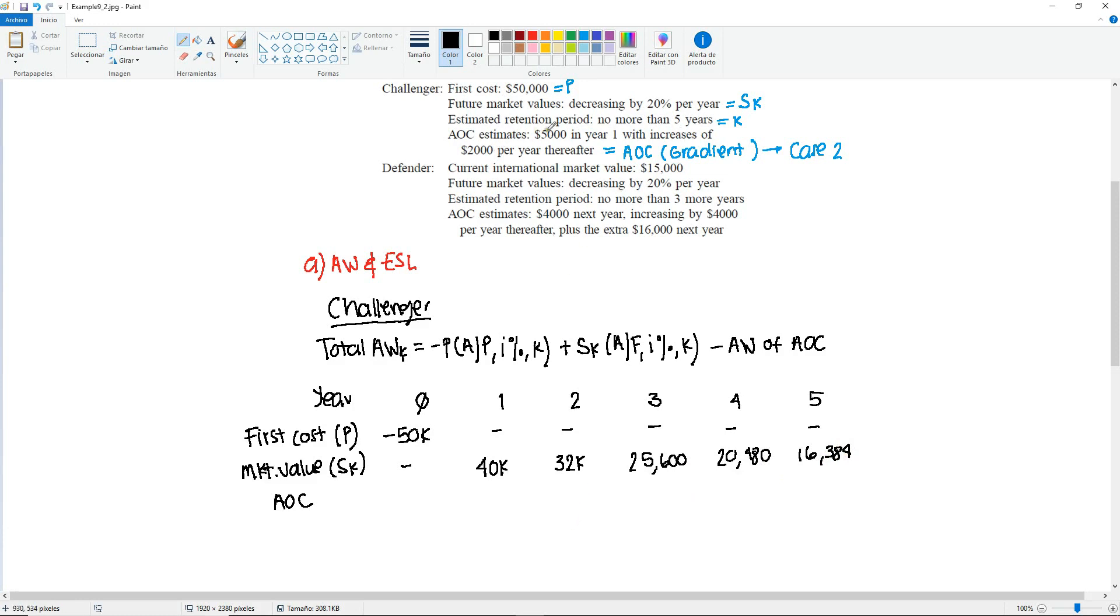I'm going to write down the annual operation costs. We have 5,000 in year one. Remember, there is no operation cost in year zero. So we start with the minus 5,000 and then with increases of 2,000 per year. So now it's going to be minus 7,000, 9,000, minus 11,000, and minus 13,000. So it's easier to see the whole picture from a table rather than a paragraph. So table is encouraged.